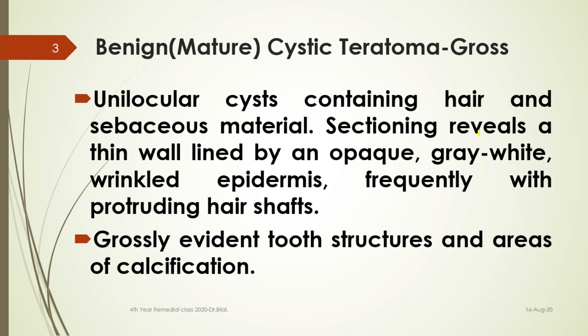An important thing to remember is that if somebody gives you a gross picture of an ovarian tumor and there is hair visible, at your level it is going to be a mature cystic teratoma — nothing else. You are more sure if somebody has also written that there is some sebaceous material as well. So in a scenario where somebody says the tumor was removed and there were hairs and sebaceous material, you know that it's a mature cystic teratoma.